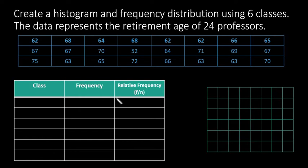For this video, I want to show you how to create a histogram and frequency distribution using six classes. The data represents the retirement age of 24 professors.